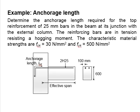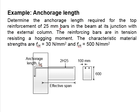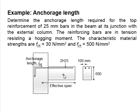Let us try an example to determine the required anchorage length in a reinforced concrete member. The question asks us to determine the anchorage length required for the top reinforcement bar of 25 mm bar diameter in the beam at each junction with the external column. The reinforcing steels are in tension, resisting a hogging moment. The concrete strength is 30 N/mm² and the steel strength is 500 N/mm². The beam here is a cantilever beam.